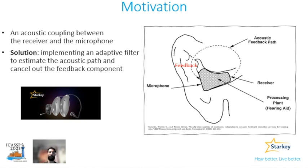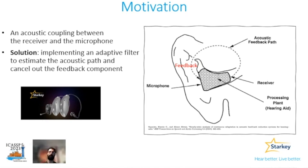One of the biggest challenges with hearing aids is the acoustic coupling between the receiver and the microphone input, as you can see with the dashed line in the right figure. This can lead to feedback and reduced sound quality, which is typically heard as a beep sound in the hearing aid. A well-known solution involves implementing an adaptive filter that estimates the acoustic path and cancels out the feedback component in the microphone input.